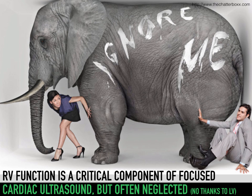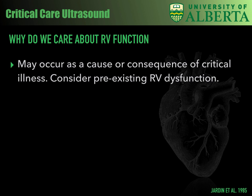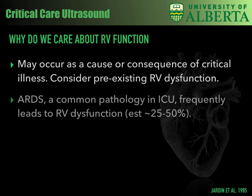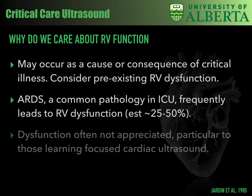RV function is a critical component of focused cardiac ultrasound; however, it's often neglected. We spend a lot of time talking and focusing on the LV, but it's also important to consider that the RV, which is immediately adjacent, also plays a vital role in the patient's hemodynamic status. RV dysfunction may be a cause or a consequence of critical illness. Patients can have pre-existing RV dysfunction, whether from chronic pulmonary hypertension, COPD, or even sleep apnea. ARDS is a common ICU pathology and frequently leads to RV dysfunction — estimates as much as 25 to 50%. Dysfunction is often not appreciated, particularly by those new to focused cardiac ultrasound, as the focus is largely on the LV.